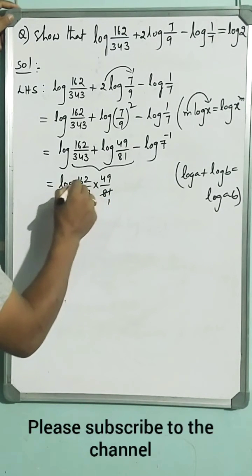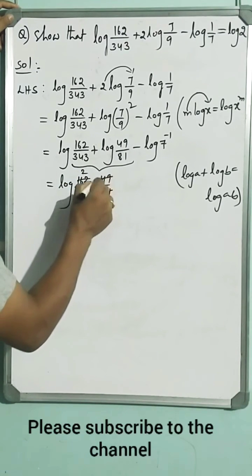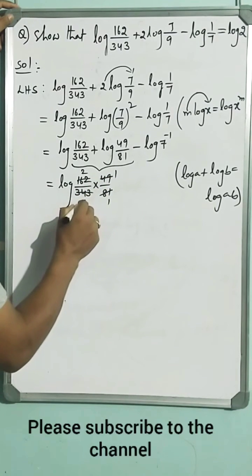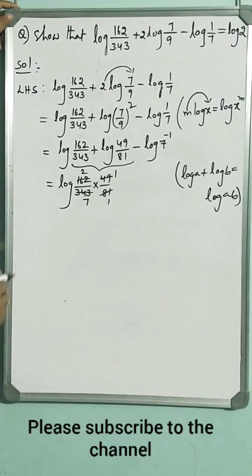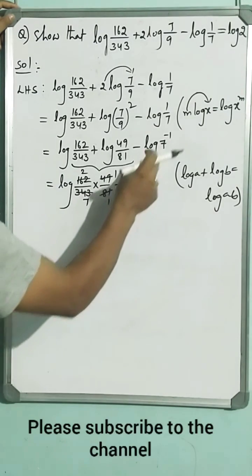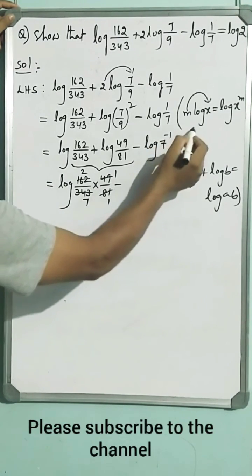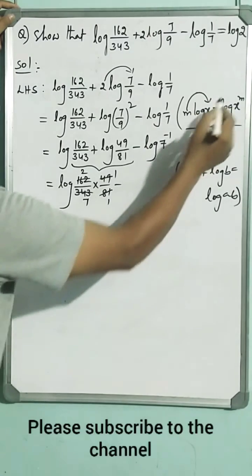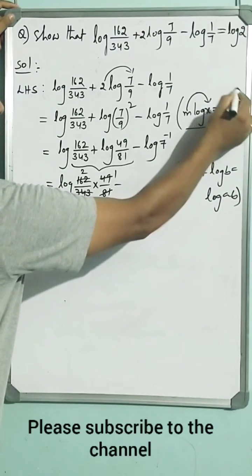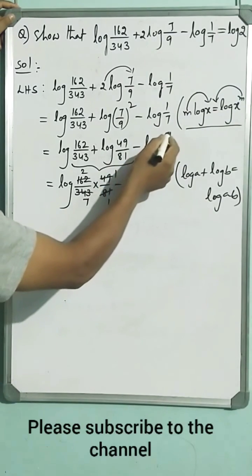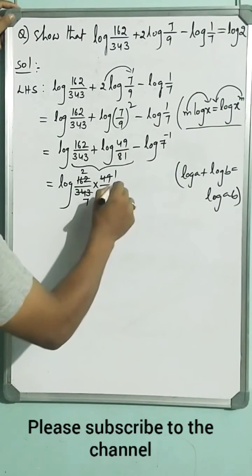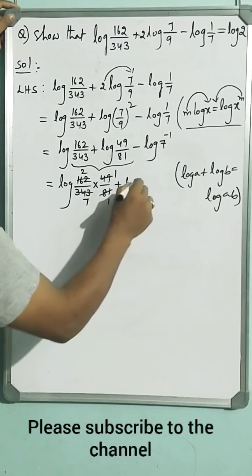This simplifies because this is 7 square, this is 7 cube. From this logarithmic law, the exponent becomes coefficient also. You can write in LHS form. So minus into minus 1 becomes plus log 7.